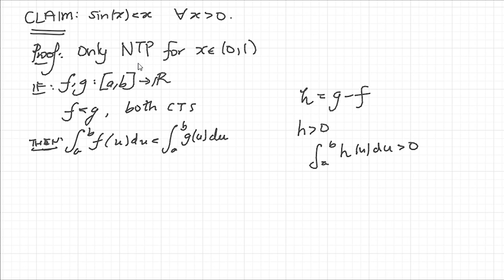So we'll use this result to prove that sin(x) is less than x. What we're going to do is let a equal 0, b equal x, and notice that a is less than b because we're assuming that x is positive.